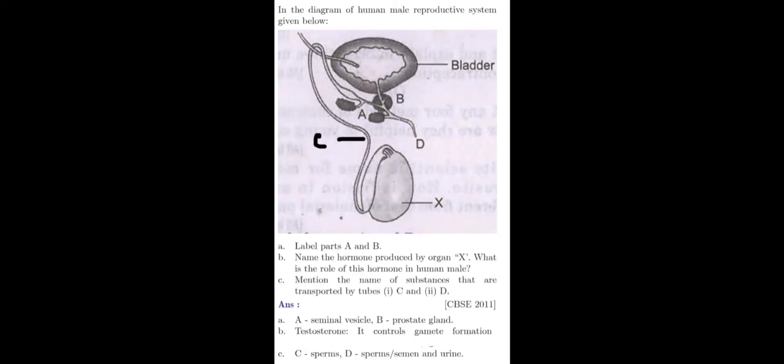The part labeled A is seminal vesicle and the part labeled B is prostate gland. The hormone secreted by the organ X, this organ is testis. The hormone secreted by the testis is testosterone. The role of this hormone in human male? It controls gamete formation or sperm formation, and it also regulates the secondary sexual characteristics in males.